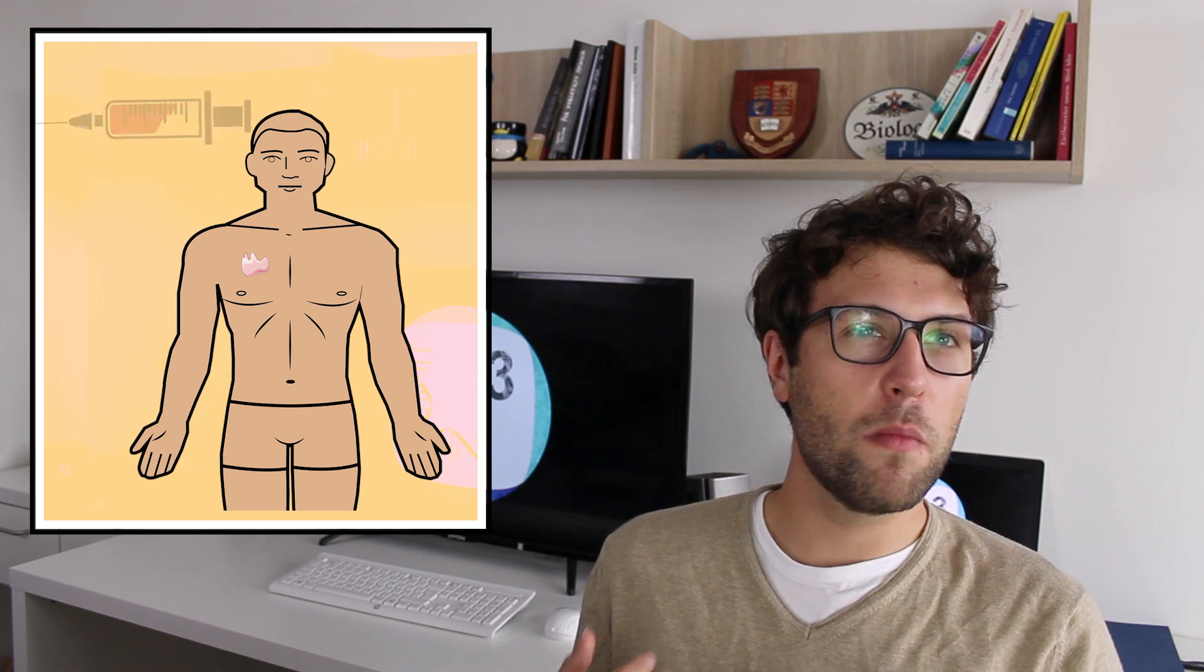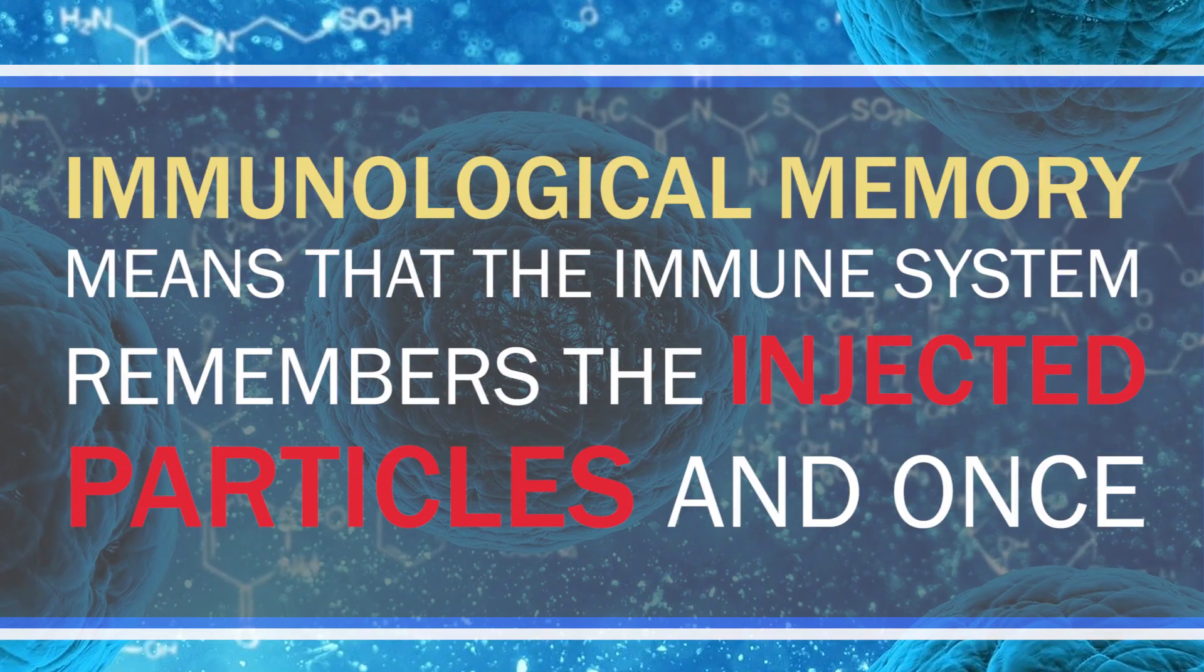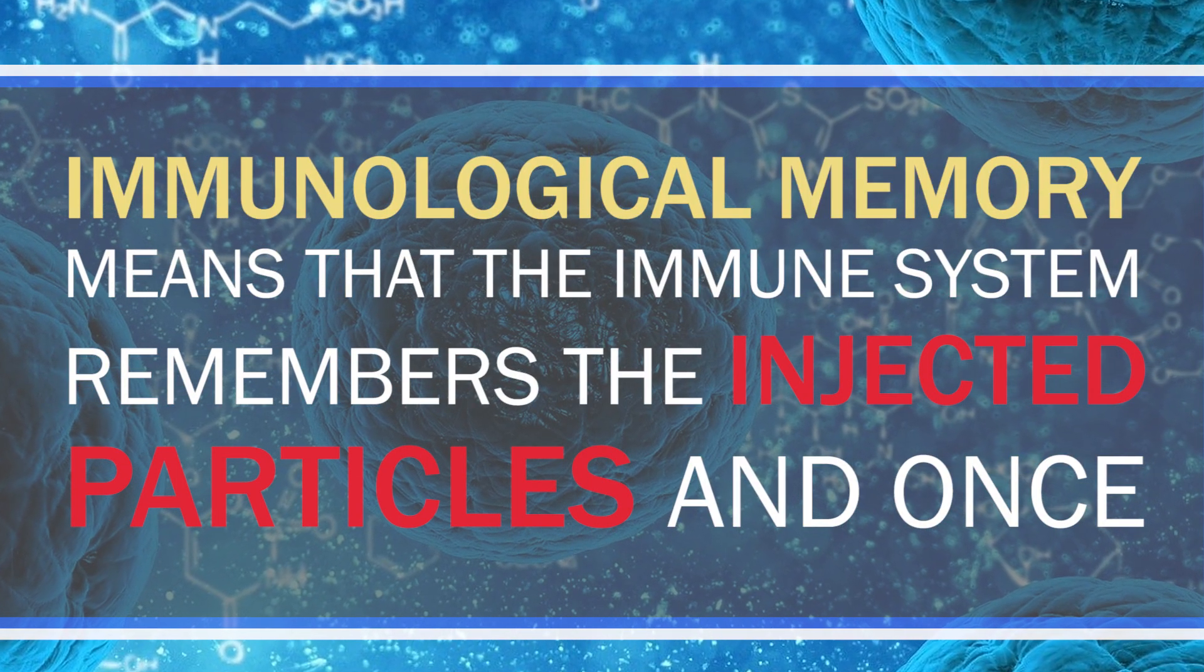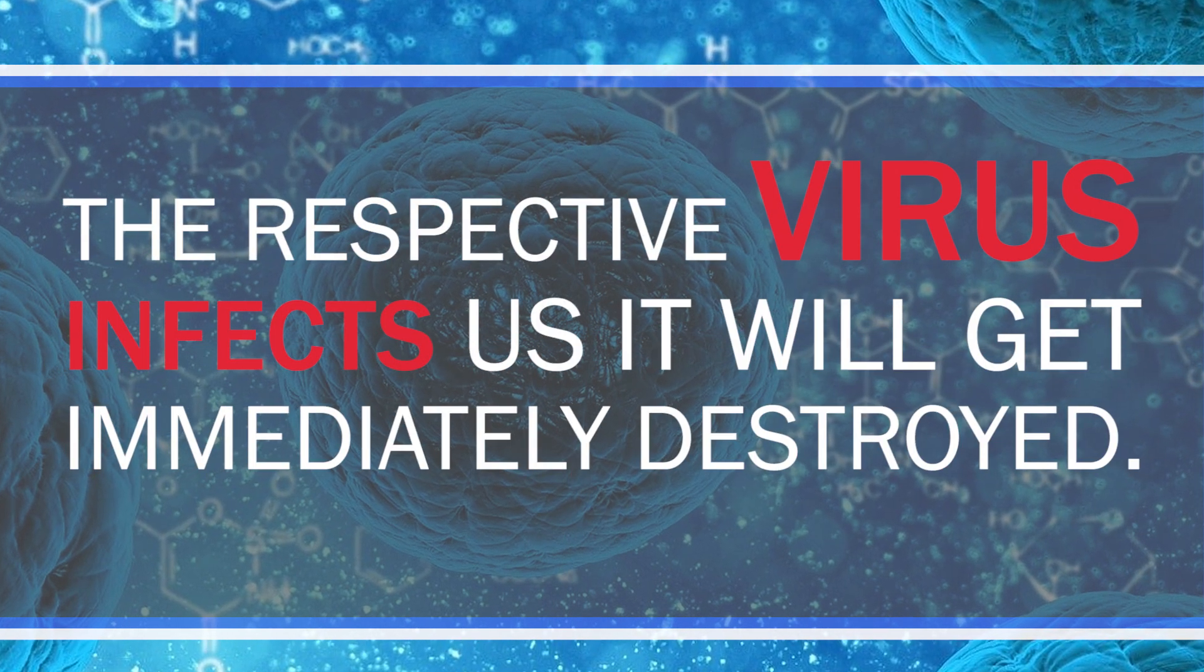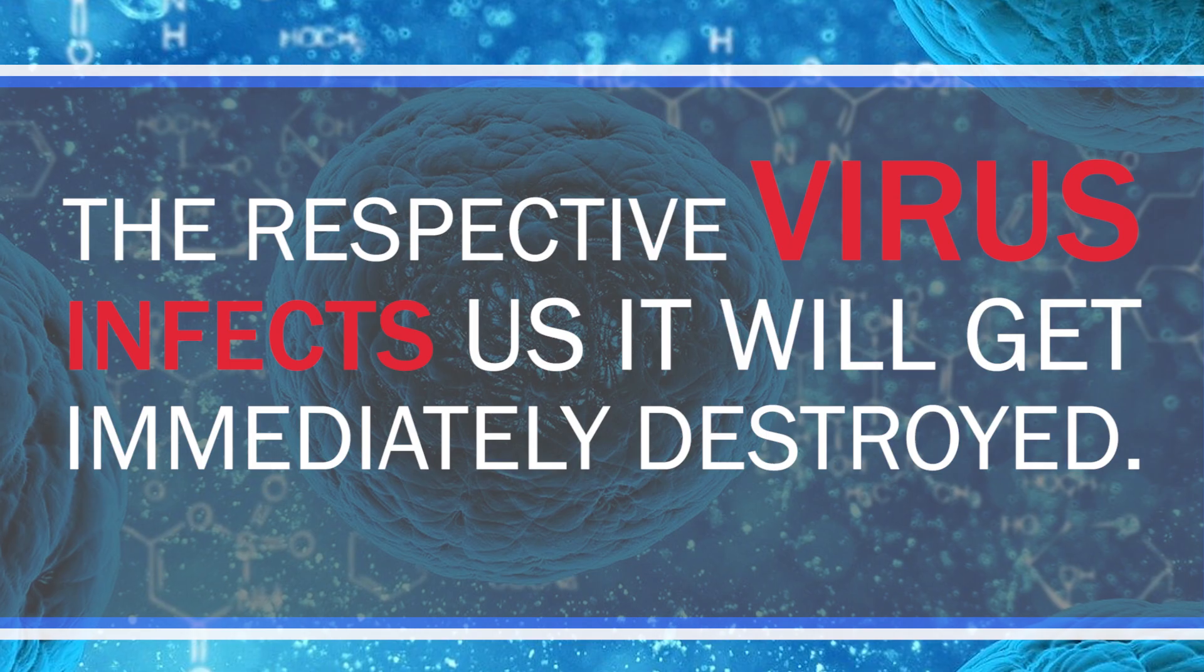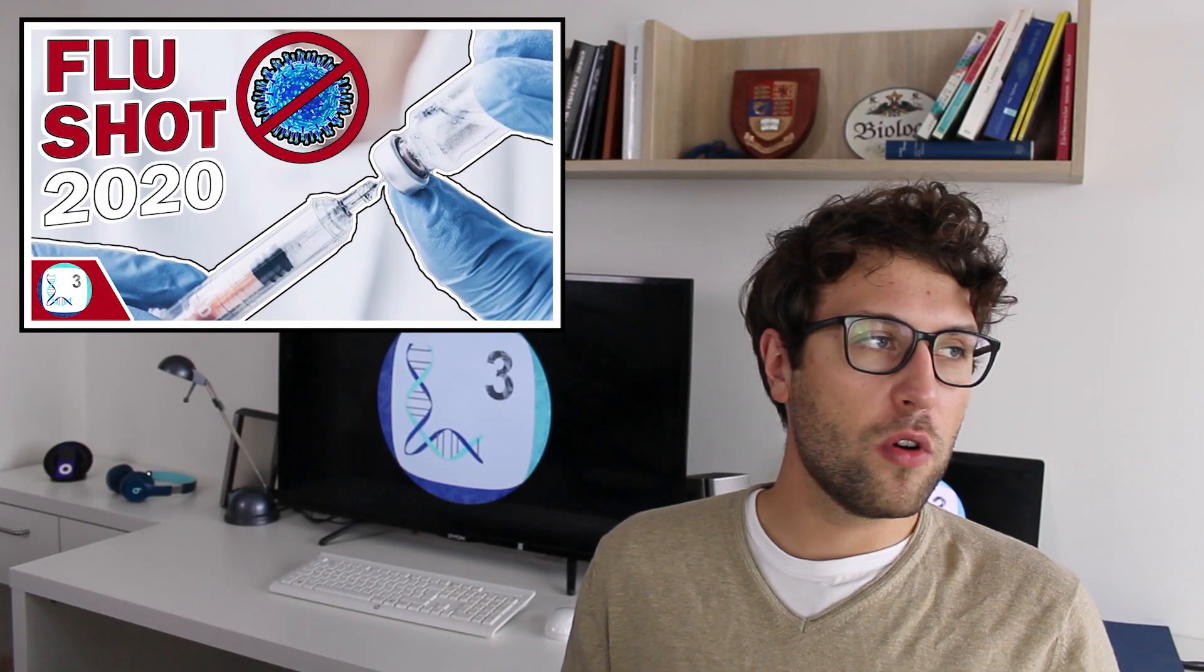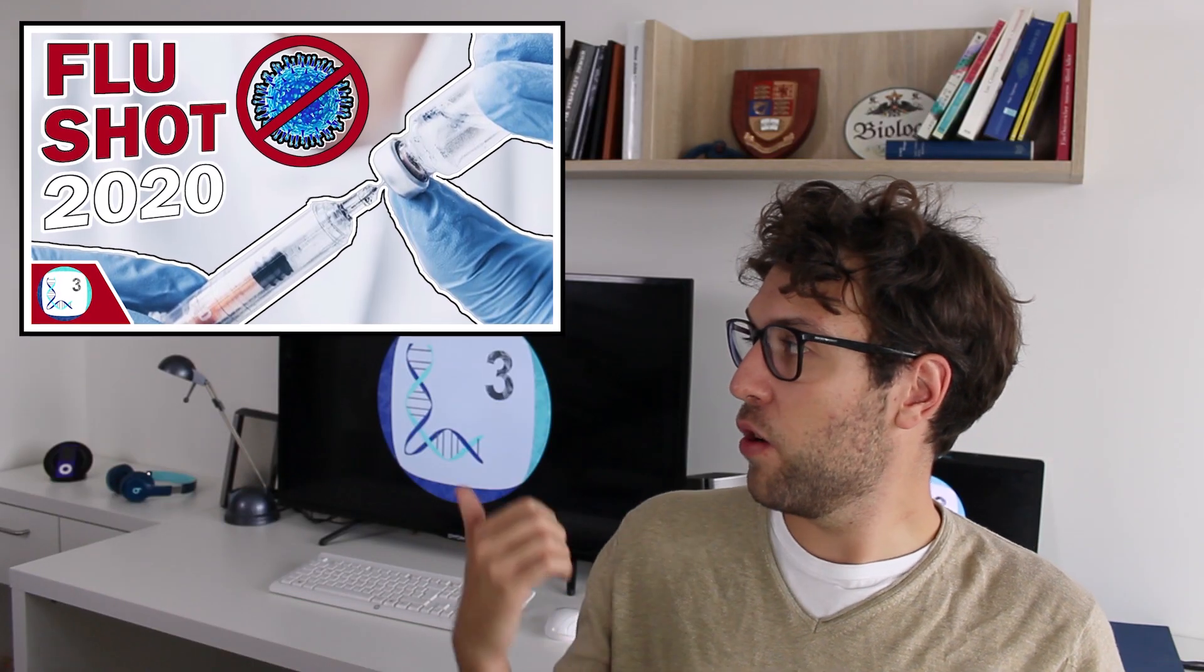All vaccines generally present a part of the virus to the immune system. So we inject viral particles or molecules in order to provoke immune responses leading to what we call immunological memory. Immunological memory means that the immune system remembers the injected particles and once the respective virus infects us it will get immediately destroyed. We go into more details in this video here where we talk about flu vaccines if you're interested. All of the vaccines are based on this principle.